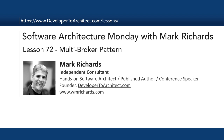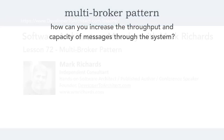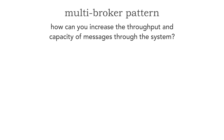In this lesson number 72 we'll take a look at a more detailed view of event-driven architecture and a pattern called the multi-broker pattern. This pattern basically asks the question: how can you increase the throughput and capacity of messages through your system? This works really well for things like logging, or if you're trying to simulate the throughput of Apache Kafka but you're not able to use Apache Kafka.